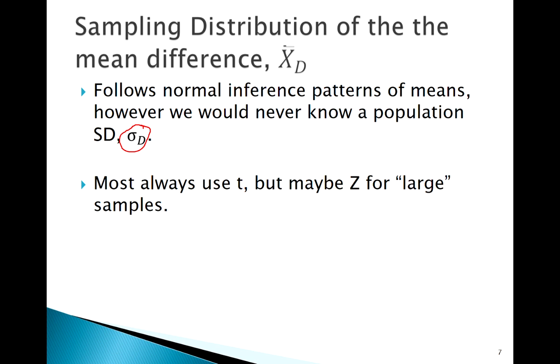When we're thinking about the population standard deviation here, the sigma of these differences, that technically doesn't exist. There's really no way we would know that. We're probably not going to know sigma, but we know still if we have large samples we can usually get away with z. But really in practice we're pretty much always going to use t for matched pairs.